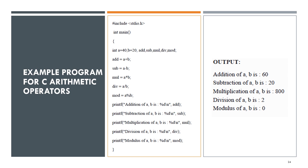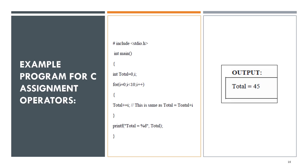This is an example of a program using arithmetic operators to find the addition, subtraction, multiplication, division, and modulus of two numbers. Next, an example of a program using assignment operators to find the total of numbers 1 through 9.